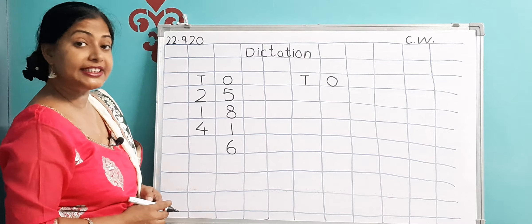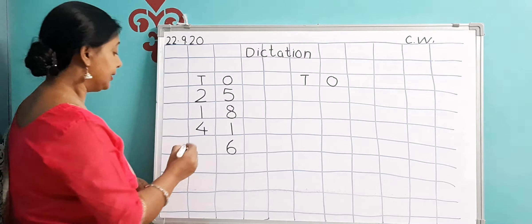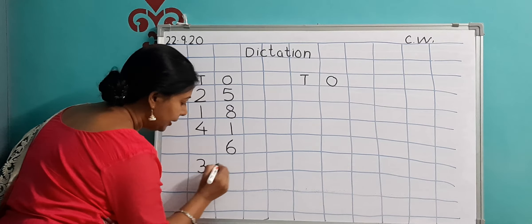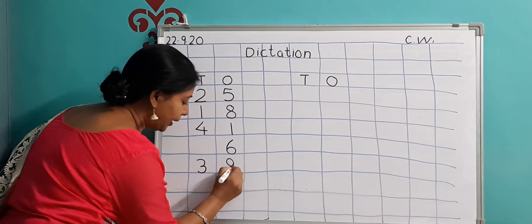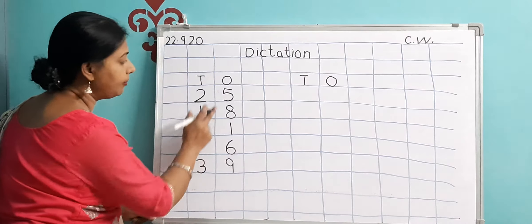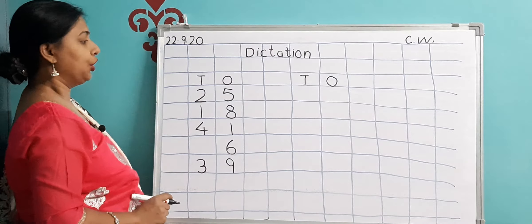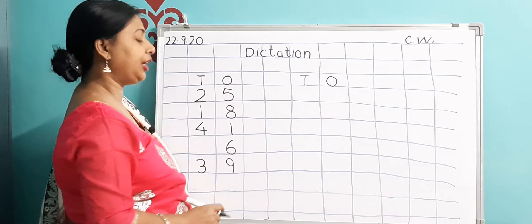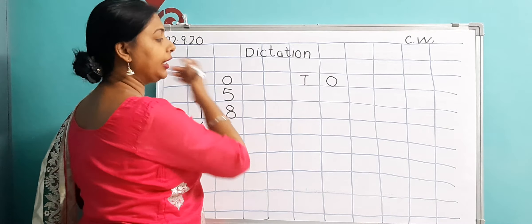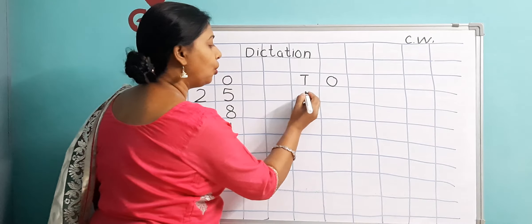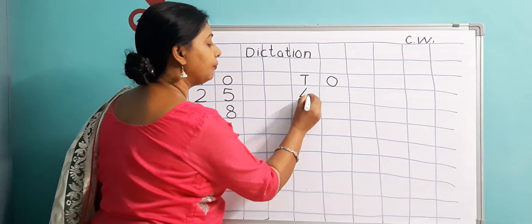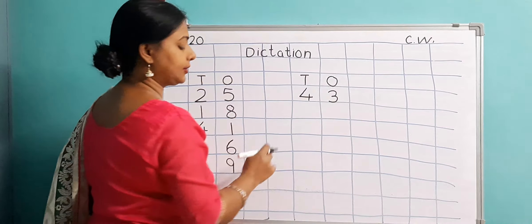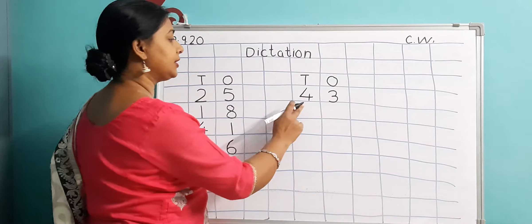Next number is 39. So how are you going to write 39? 3 goes in the Tens column and 9 goes under the Ones column. Next number is 43. You will write 43 in the next column — 4 of 40 here in the Tens column and 3 in the Ones column. So this is 43.